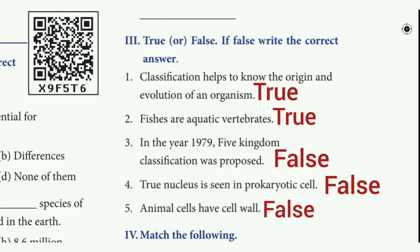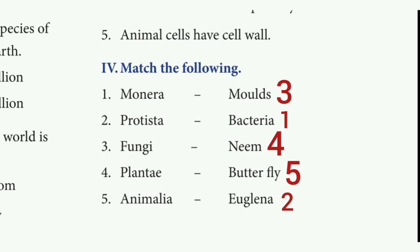Fourth: true nucleus is seen in prokaryotic cells. The answer is false. Fifth: animal cells have cell walls. The answer is false. Match the following: first answer is bacteria; second answer is Euglena; third answer is moss; fourth answer is Neem; fifth answer is butterfly.